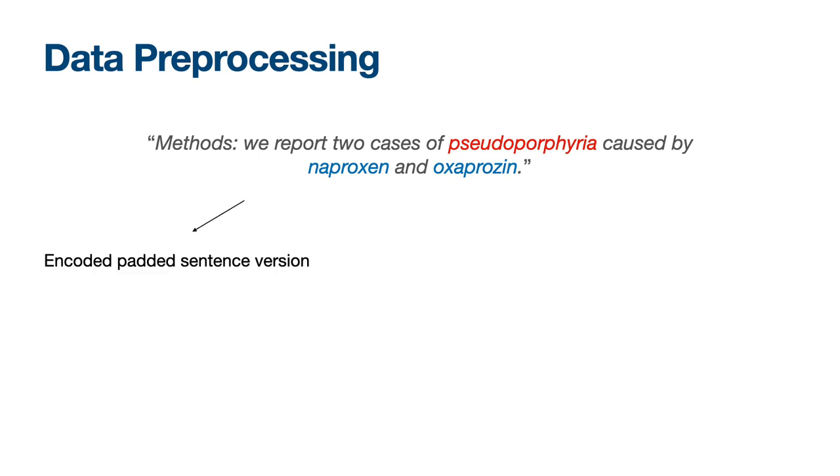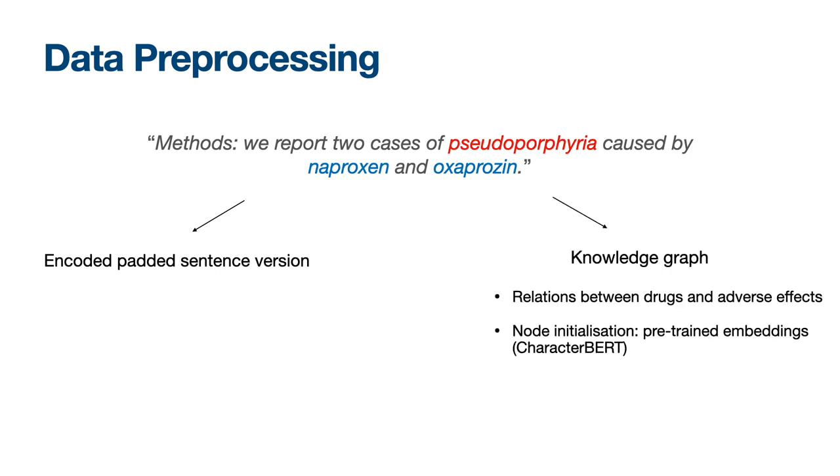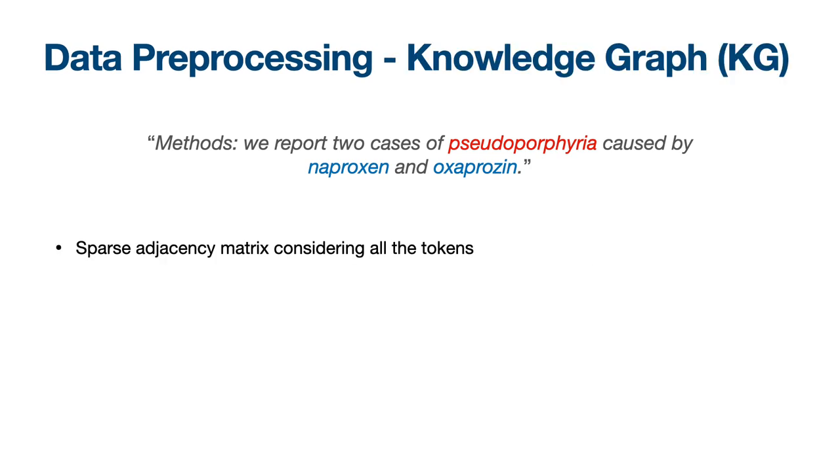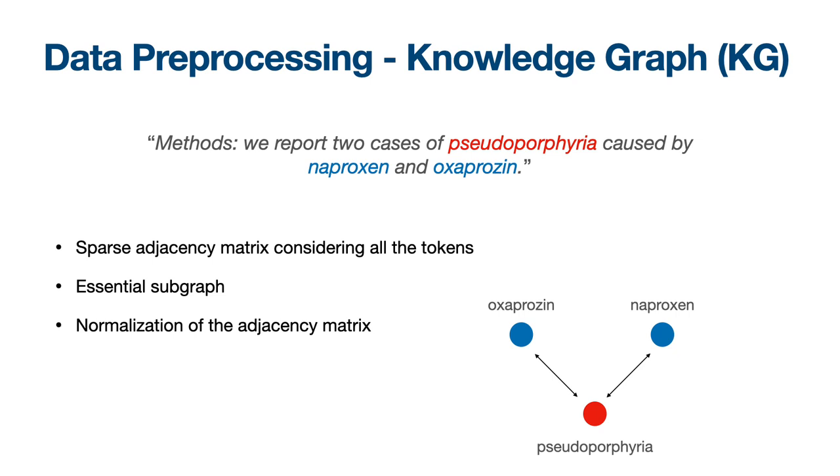We extract the encoded, padded version of this sentence, and also the relative knowledge graph to model the relations in the sentence. The nodes are initialized with pre-trained embeddings. If we consider all the tokens, the adjacency matrix is very sparse, as the relations are rare and there are many singleton nodes. Hence, we propose to use only the essential subgraph, and in our example we have two drug nodes and one adverse effect node.